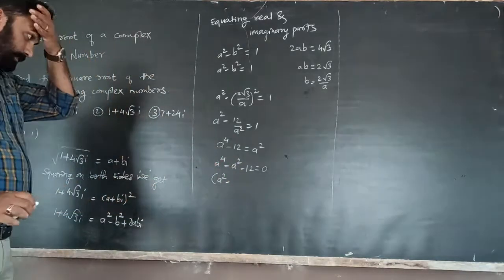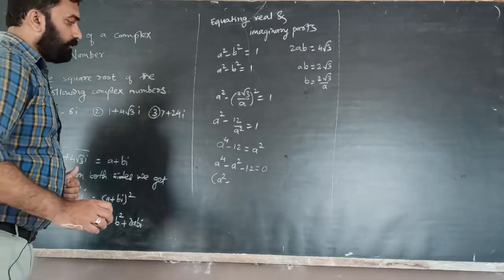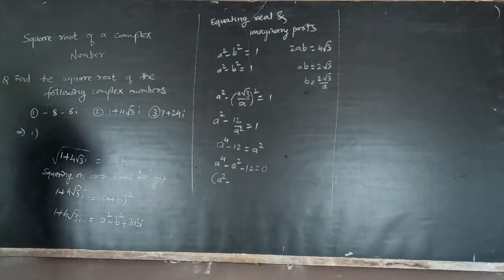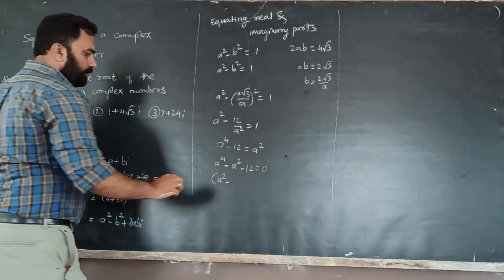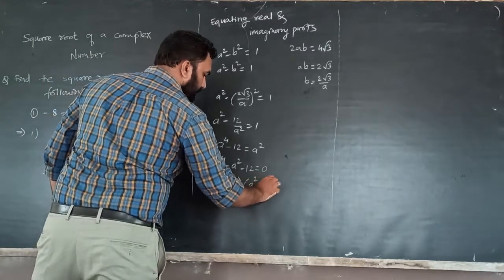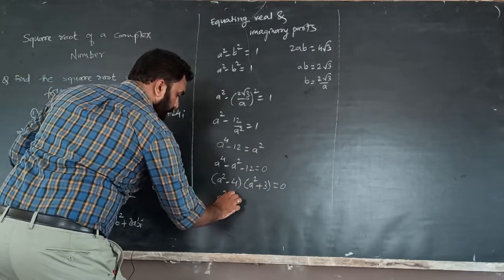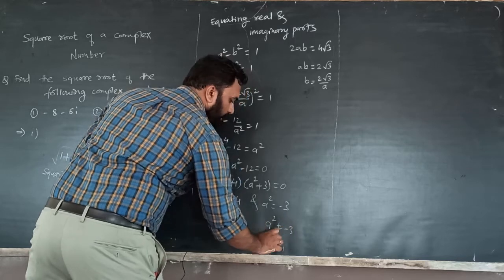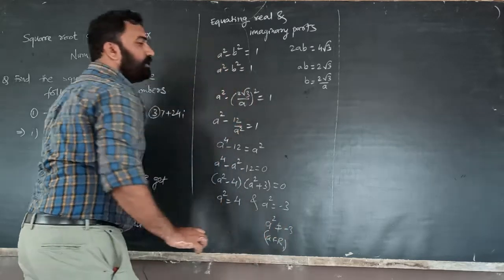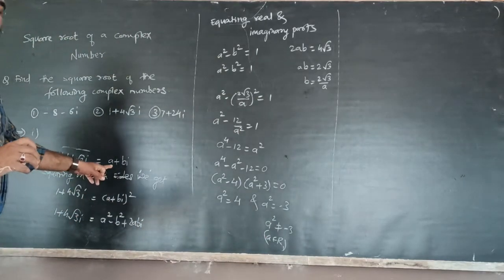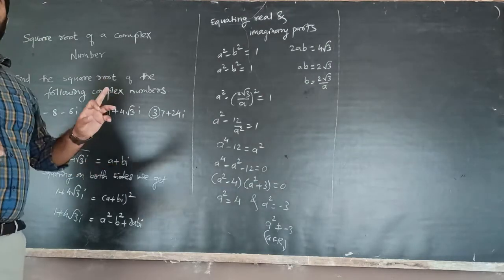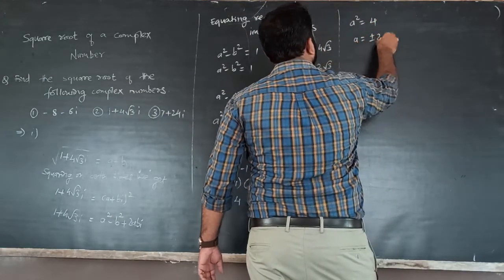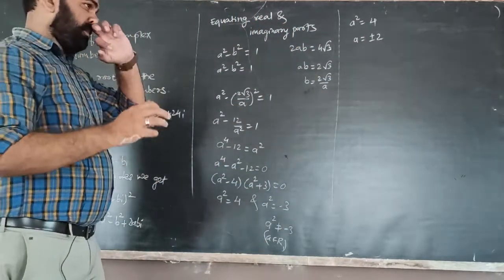Factoring gives (a squared minus 4)(a squared plus 3) equals 0. So a squared equals 4 or a squared equals minus 3. Since a squared equals minus 3 is not valid because a belongs to the real numbers, we take a squared equals 4.